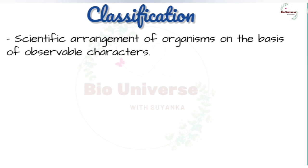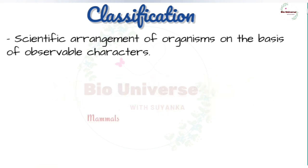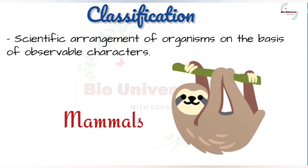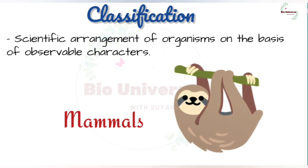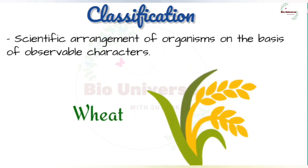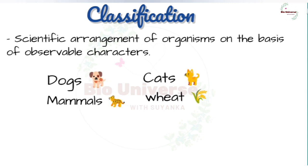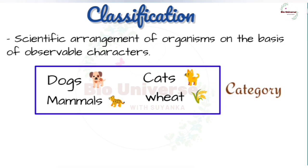For example, we easily recognize groups such as plants or animals, or dogs, cats, or insects. If we were to say mammals, we would think of animals with external ears and body hair. In plants, if we talk of wheat, the picture in our minds will be of wheat plants, not of rice or any other plant. Hence, all these — dogs, cats, mammals, wheat, rice, plants, animals — are convenient categories we use to study organisms.